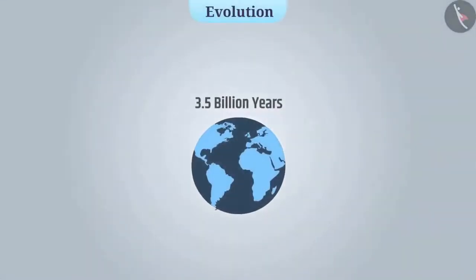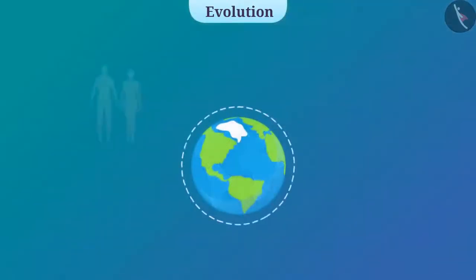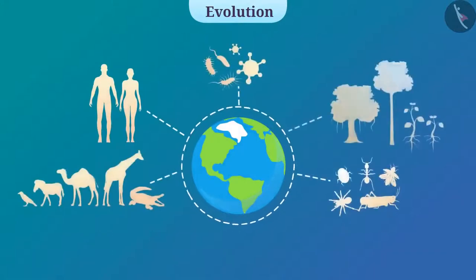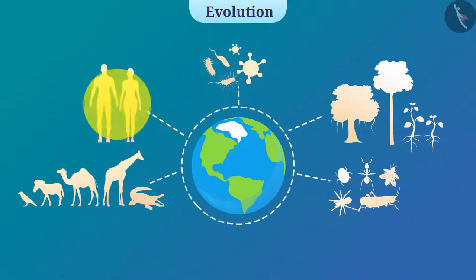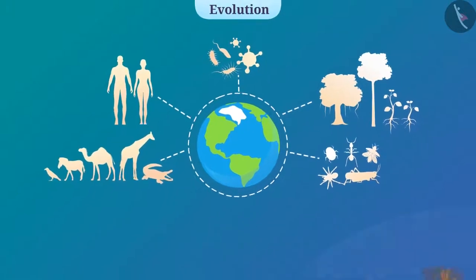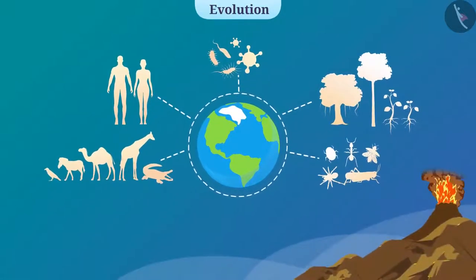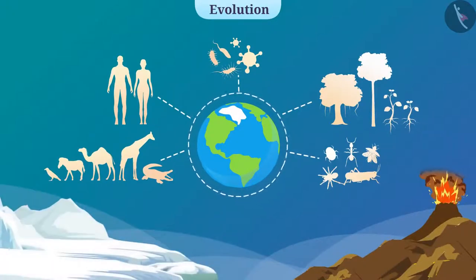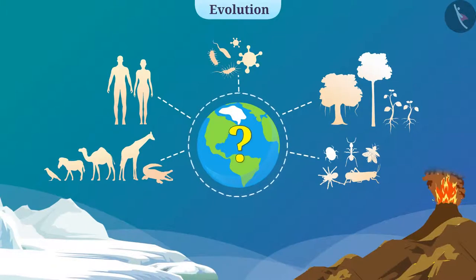Nearly 3.5 billion years ago, there was no life on Earth. But today, we see millions of species of plants and animals on Earth. There are organisms from the simplest form such as bacteria to those with complex body organizations such as humans. Many of these organisms are present in extremely hot places like volcanoes and many in extreme cold places like Earth's poles. How do you think so much biodiversity would have arisen on Earth?